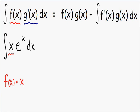The derivative of this needs to be simpler. So let's take the derivative. Our f prime of x is equal to the derivative of x which is just 1. And 1 is certainly simpler than x. So that's a good indication that we have chosen the correct f of x.